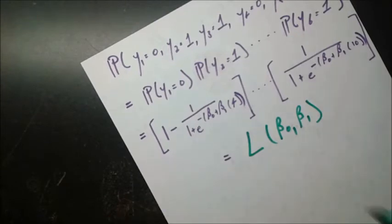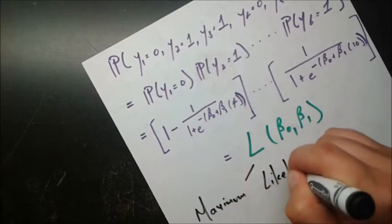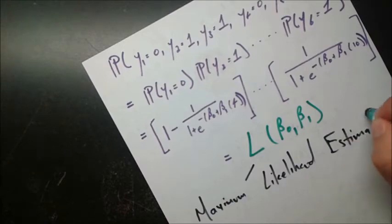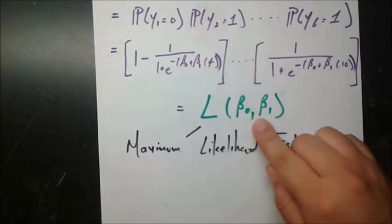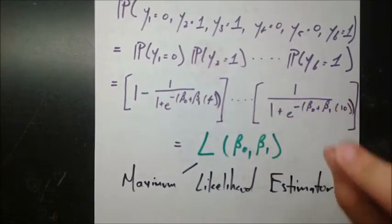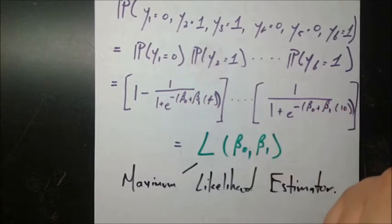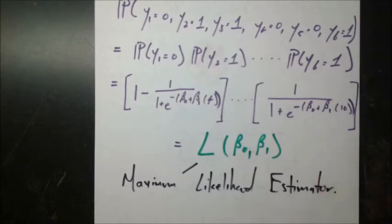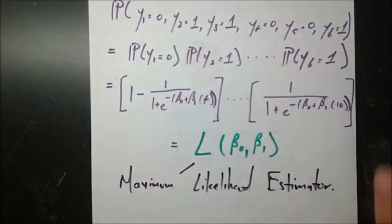We're going to name this function L for likelihood — it's a function of beta naught and beta 1. It's called the maximum likelihood estimator because we're trying to maximize this likelihood. We want to find the beta naught and beta 1 such that this probability is maximized, because the sample actually happened. We don't have a closed form for those betas, but we can use numerical analysis and computer programming to find the optimal beta naught and beta 1 that maximizes this function.